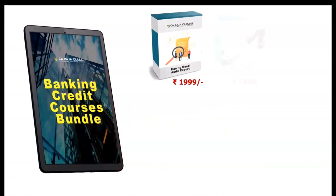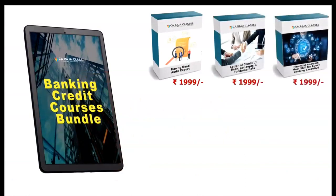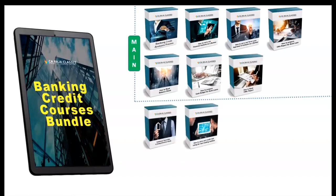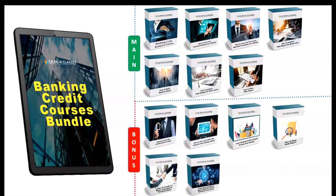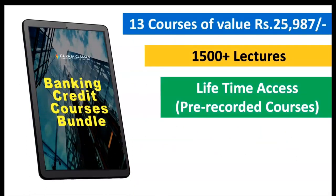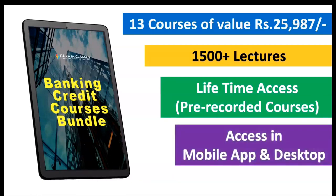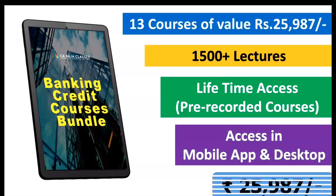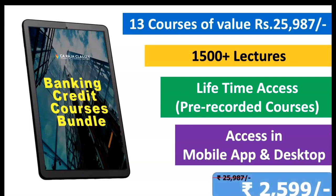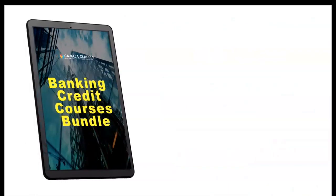And it is not yet over. Some more bonus courses: Course 11 on how to read audit reports, Course 12 focusing on letter of credit, and Course 13 on financial analysis in a very short duration. So you have 13 courses of value close to $26,000, but you get them for just $2,599 — seven main courses plus six complimentary bonus courses. That's 1,500 plus lectures with lifetime access for all pre-recorded courses, accessible on desktop, laptop, mobile, iPhone, and iPad. The overall value is $26,000 but you get it for only $2,599. This is a once-in-a-lifetime opportunity. Enroll now — I'll see you inside the course.